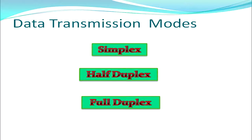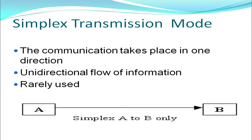Now we move on to data transmission modes. We will be covering three basic transmission modes: simplex, half-duplex, and full-duplex. In simplex transmission mode, as the name says, this is the simplest mode of transmission. Two computers are connected by one single transmission medium and communication takes place only in one direction — a unidirectional flow of information. The wire can transmit data either from A to B or B to A, but not both. Since this causes a lot of time wastage, this method is rarely used.